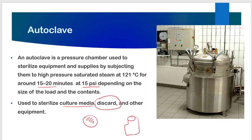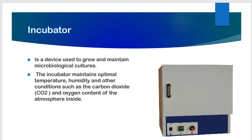So we have to check before autoclaving whether an object is autoclavable or not. The autoclave is basically used for sterilizing things. Moving ahead, the next equipment is the incubator. As the name indicates, the incubator is used to incubate bacterial cultures at a certain temperature. For example, if I have isolated a bacteria from soil, the soil temperature usually lies between 27 to 13 degrees Celsius, so I will set the incubator temperature to 27, 28, or 30 degrees as per my requirement, and the microorganism will grow inside.